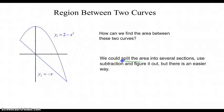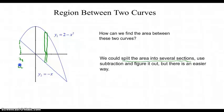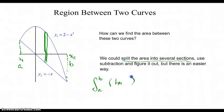How do we find area in the plane when it looks like this? We could split the area into sections and try adding and subtracting. But it turns out that if we take infinitely many rectangles, starting at the left x-value — we'll call that x-sub-1 or a — and stopping at the right endpoint — x-sub-2 or b — and we're adding up infinitely many rectangles from a up to b, the rectangles have heights times widths.